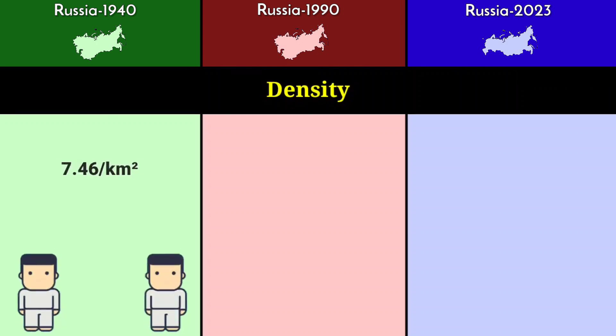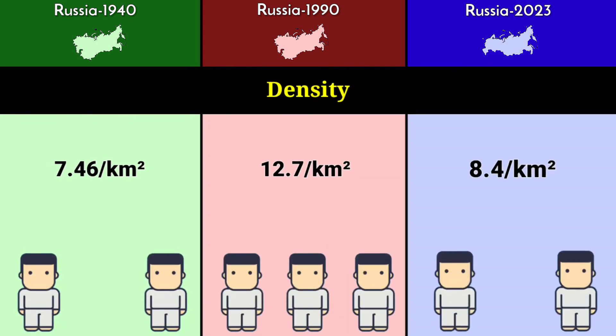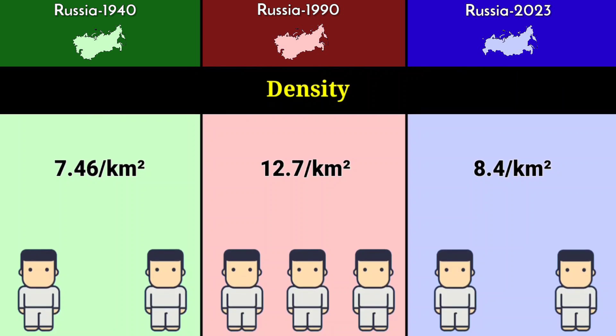Density: 7.46 per square kilometer in 1940, 12.7 per square kilometer in 1990, and 8.4 per square kilometer in 2023.